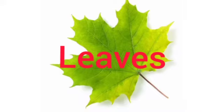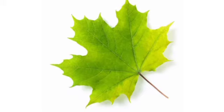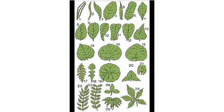Leaves grow on stems. They have different shapes, sizes and colors. We can identify a plant by looking at its leaf — like plantain leaf, mango leaf and tamarind leaf. We can easily identify a plant by looking at its leaf.